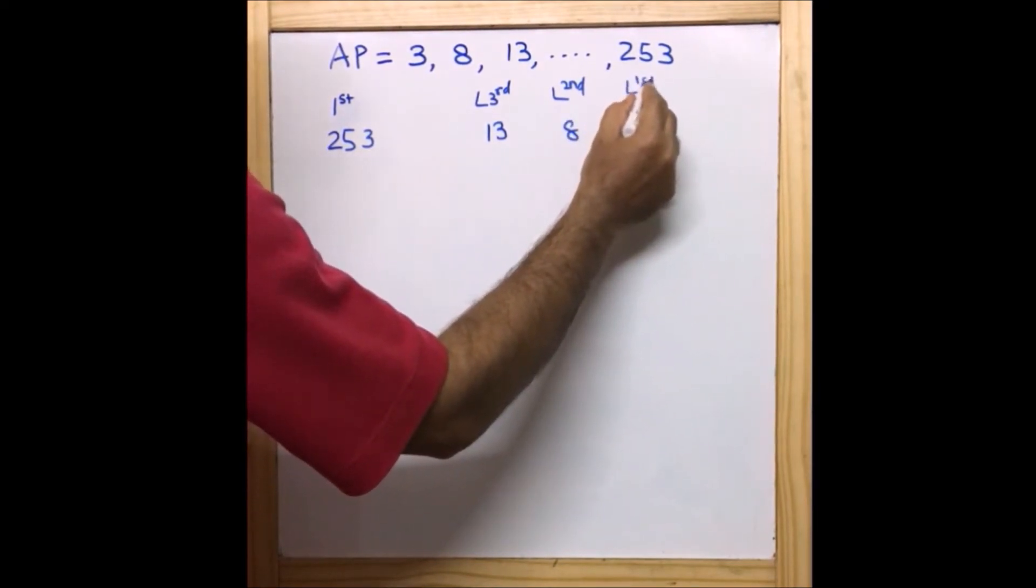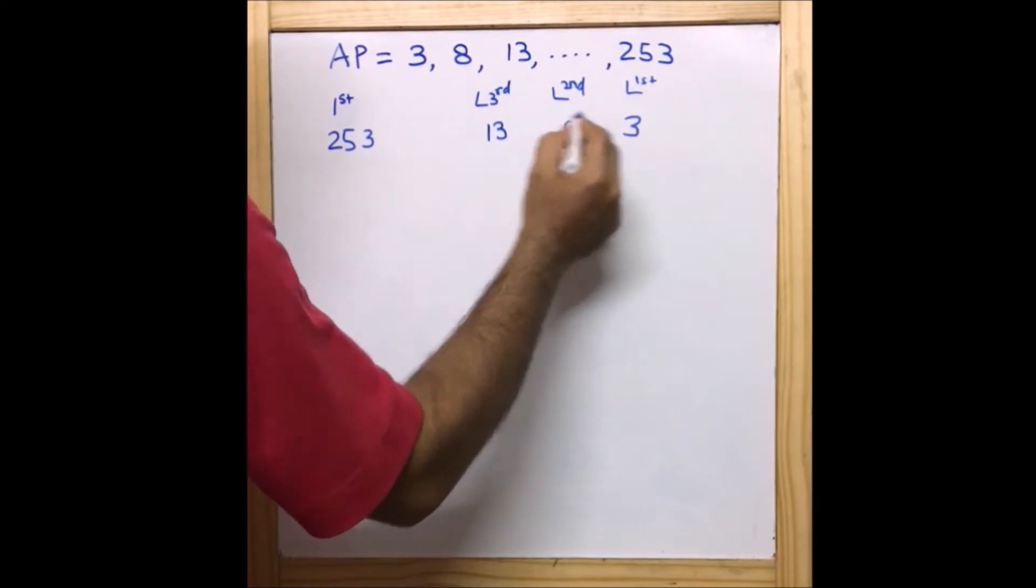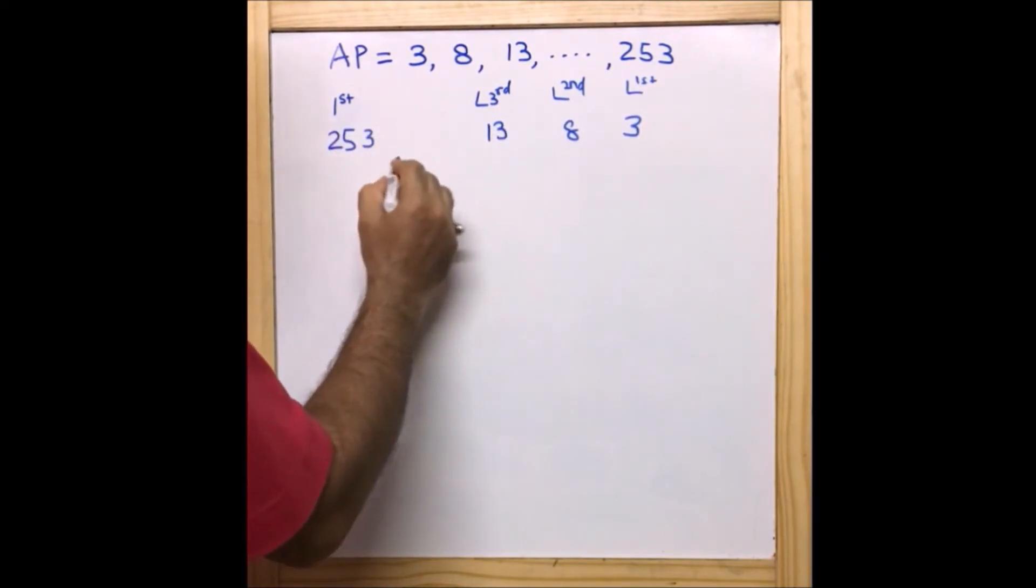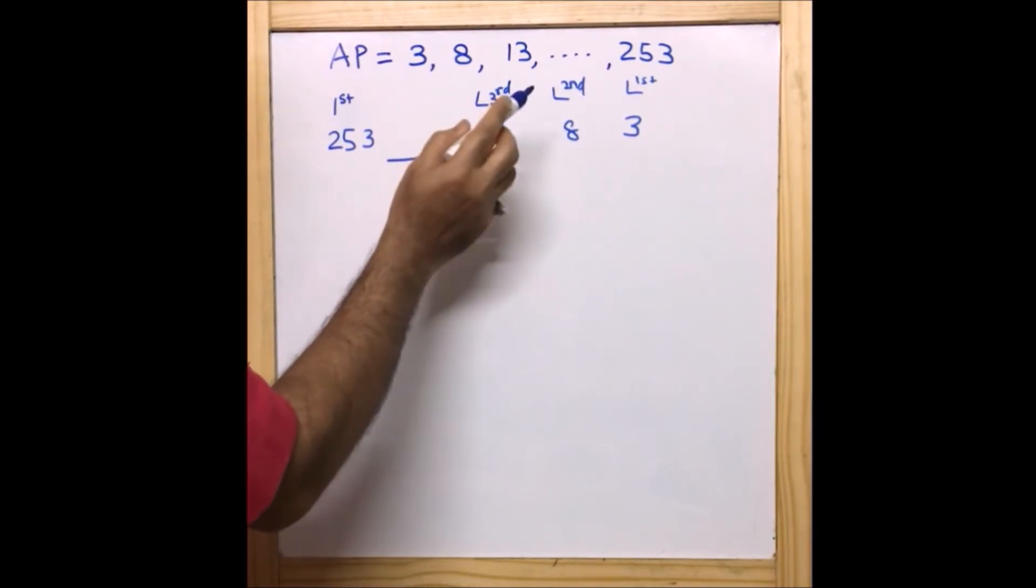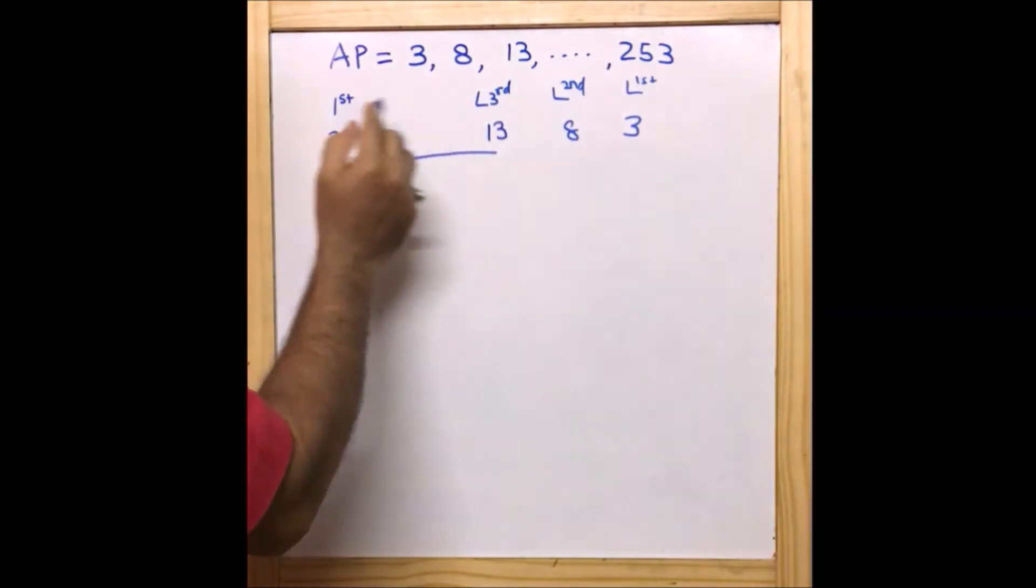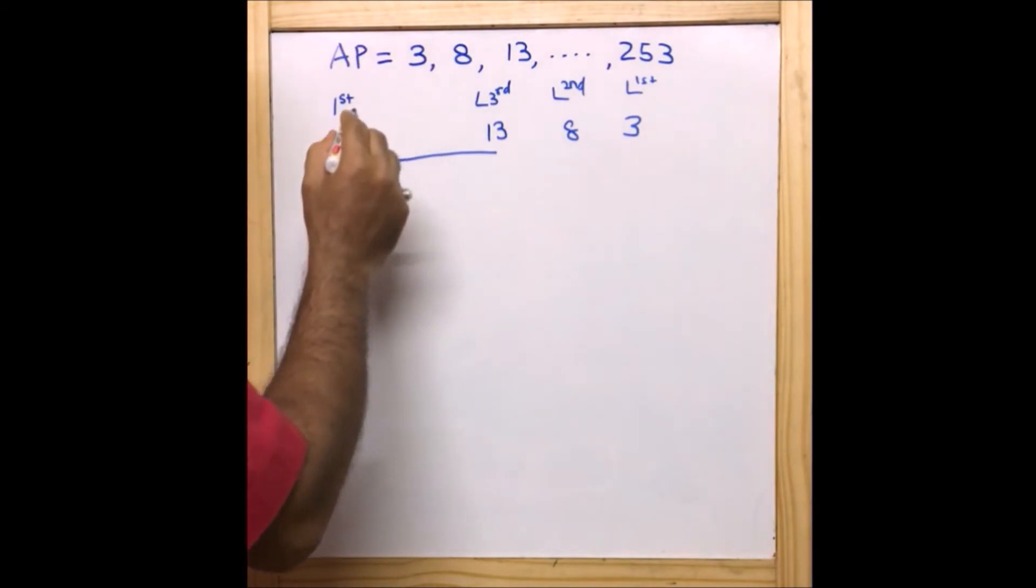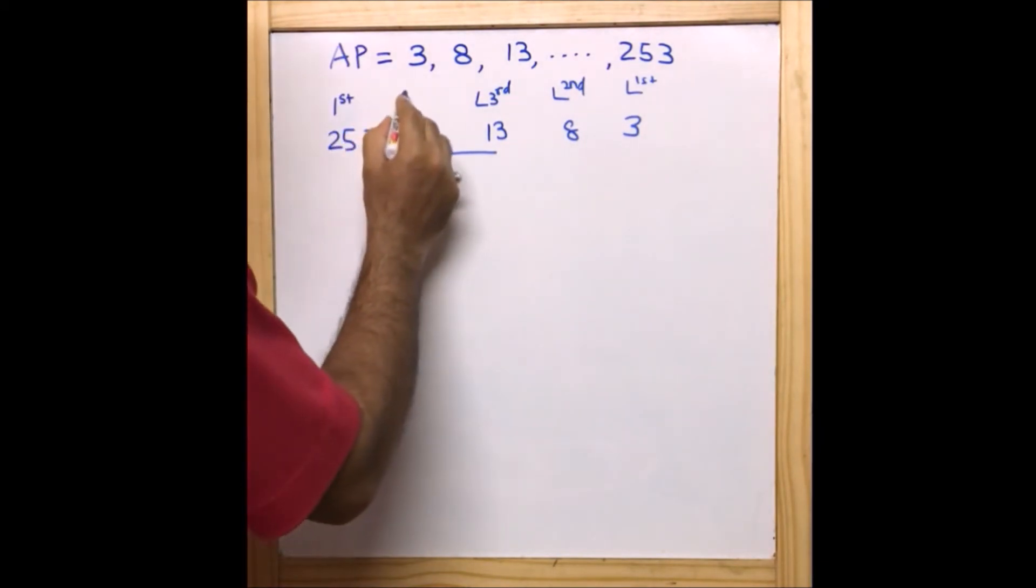Definitely the 20th term will fall in between 253 and 13, because if you keep on counting from the last or from the first, the 20th term will fall here. Let us make this 20th term as a_20, and we are going to find out this value.